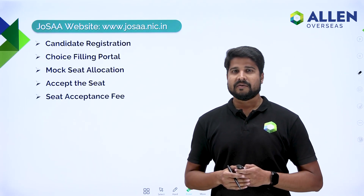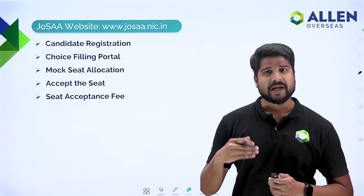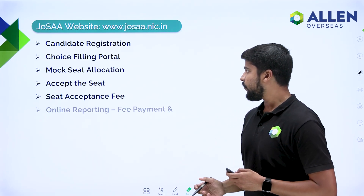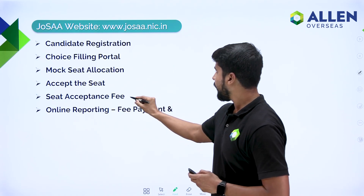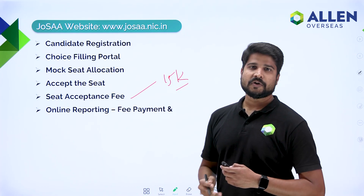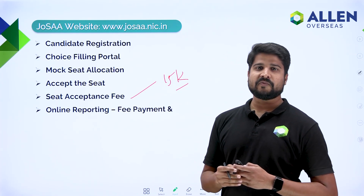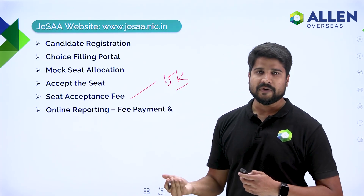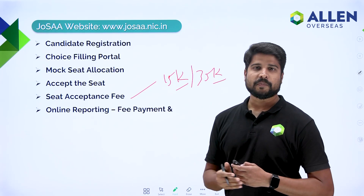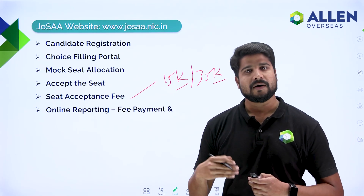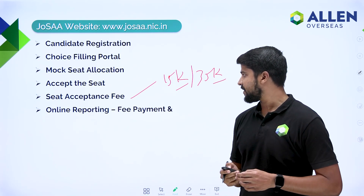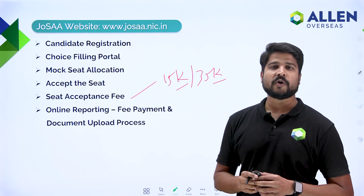After that, the seat acceptance option is there. For seat acceptance, you will have to pay the seat acceptance fee — that is called online reporting. The fee is 15,000 rupees INR if you are from SC, ST, and PwD category, and 35,000 rupees INR if you are from any other category.